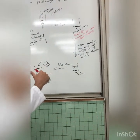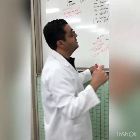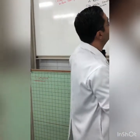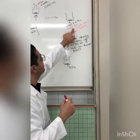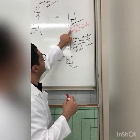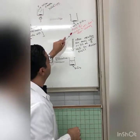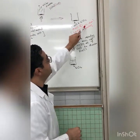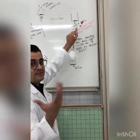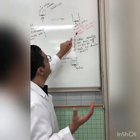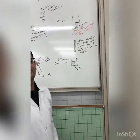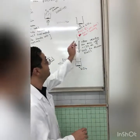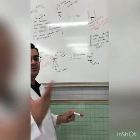Before proceeding to the next step, we record Mass number two, which represents the mass of the beaker plus the residue. The remaining materials are sodium chloride and silicon dioxide. This mass is very important and will be used in the calculation part.